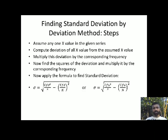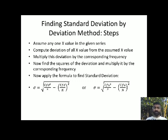What formula is going to be followed for the standard deviation? The formula is: sigma is equal to the square root of the sum of fu squared by n, minus the sum of fu by n, whole square. Here u is nothing but the deviation.